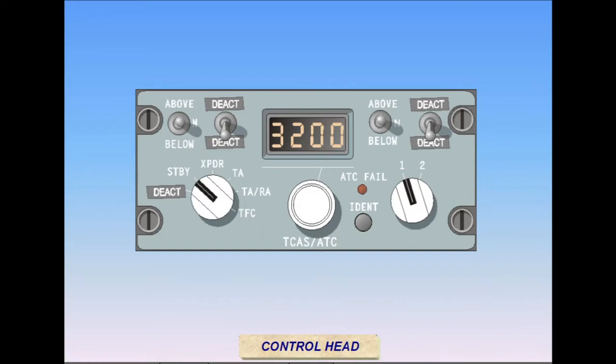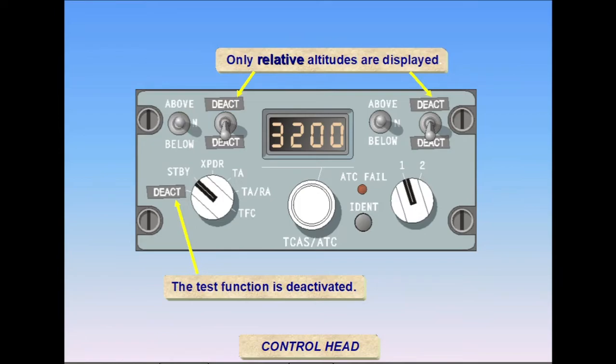This TCAS system runs continuous self-tests, therefore the test position on the mode switch is deactivated and no operator test procedures are necessary. The ability to switch between relative and absolute altitude readouts is also deactivated. Only relative traffic altitude is displayed on the nav display.